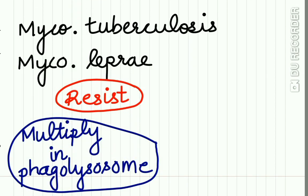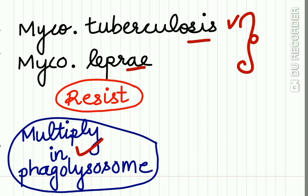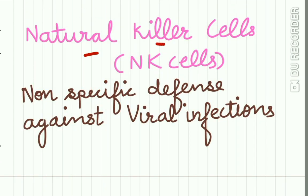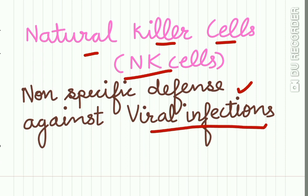There are certain exceptions: Mycobacterium tuberculosis and Mycobacterium leprae resist killing inside the phagolysosome. Instead, these bacteria multiply within the phagolysosome and cause dissemination of the infection. There are also natural killer cells (NK cells) which have non-specific defense against viral infections.